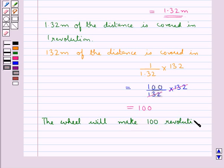132 cancels with 132 and so this is equal to 100. Thus we say the wheel will make 100 revolutions to travel 0.132 km.